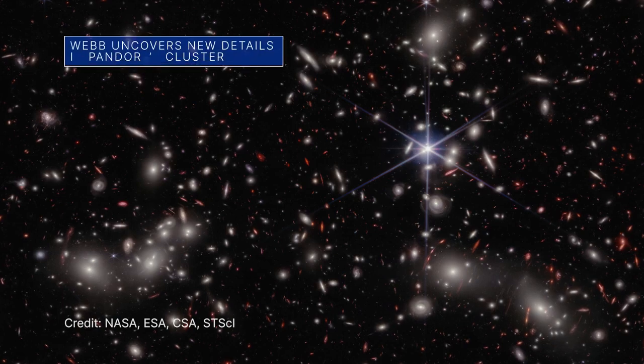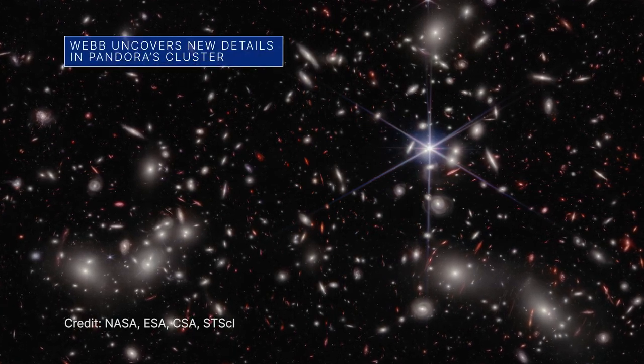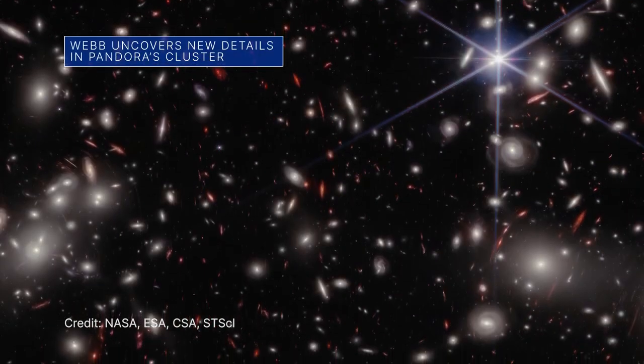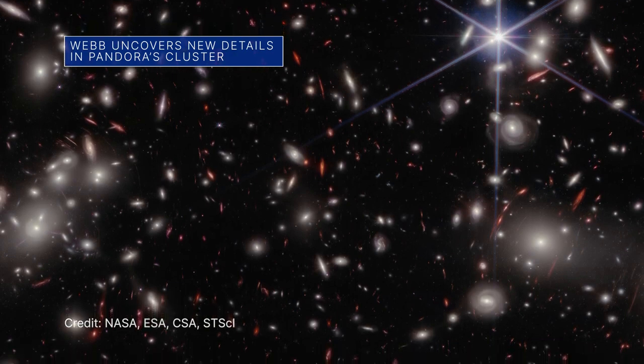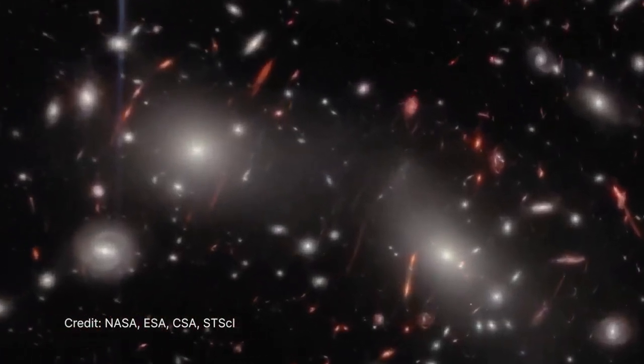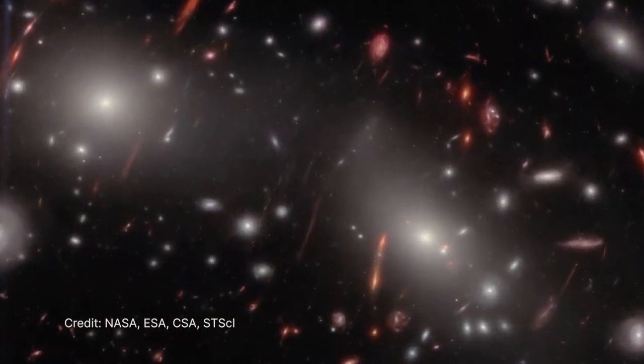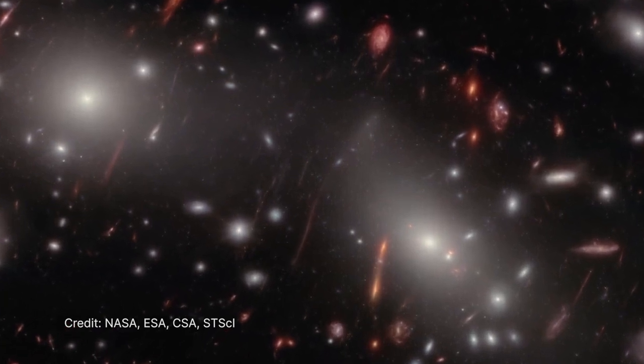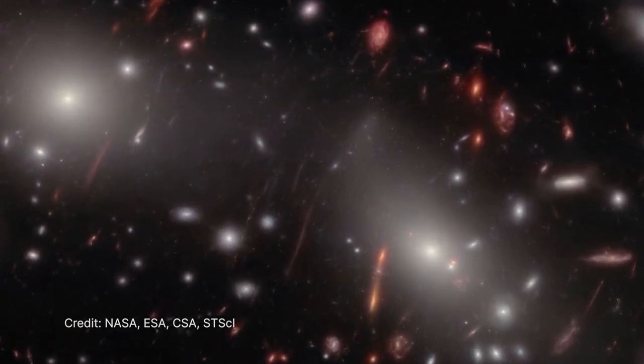The latest deep-field image from NASA's James Webb Space Telescope features a region of space known as Pandora's Cluster. A mega-cluster of galaxies there acts like a natural magnifying glass that allows much more distant galaxies in the early universe to be observed.